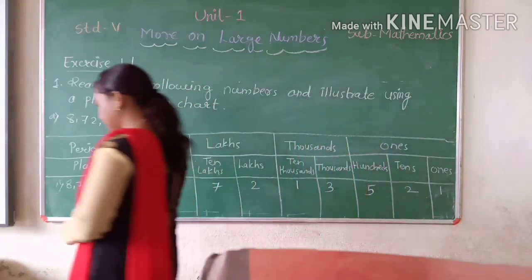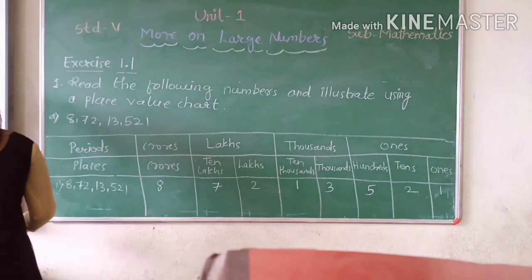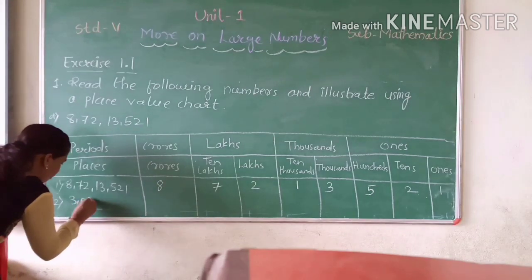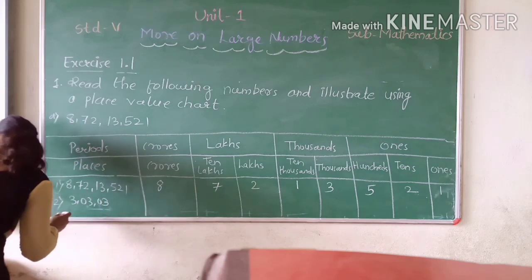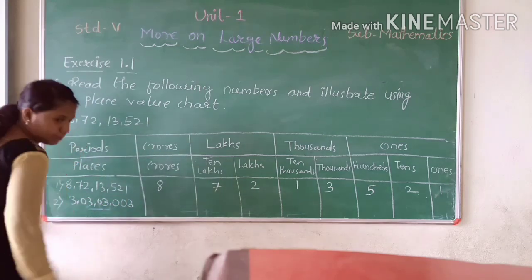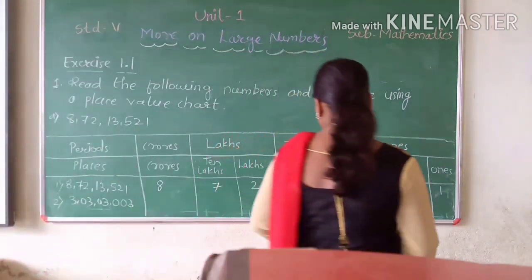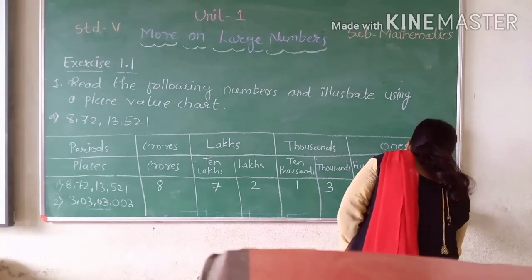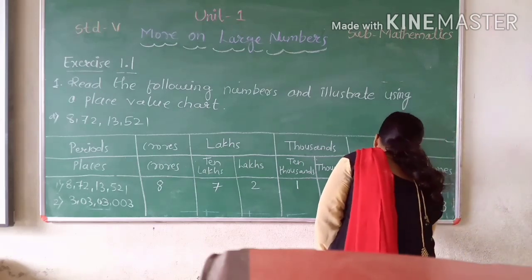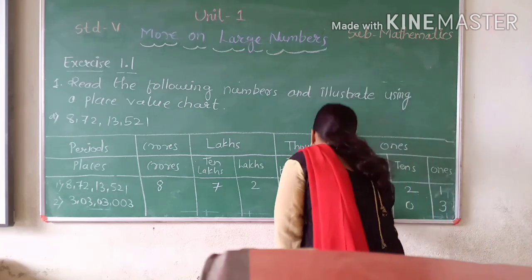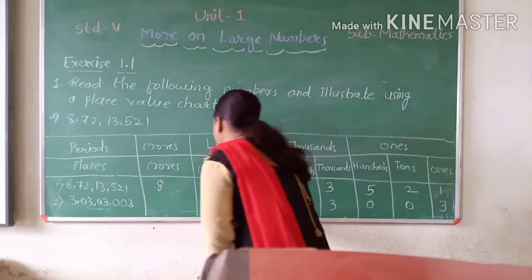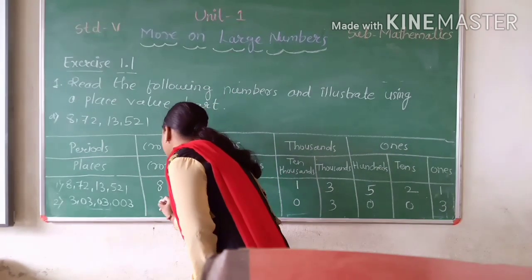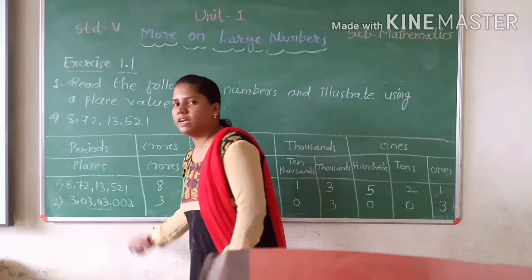So let us take one more example. Here again we have to distribute the numbers in this particular chart. In the ones place: 3. Tens place: 1 to 0. Hundreds place: 1 to 0. Thousands place: 0. Ten-thousands place: 3. Lakh place: 0. Crore: 3. That gives us 3 crore, 3,000 and 3.